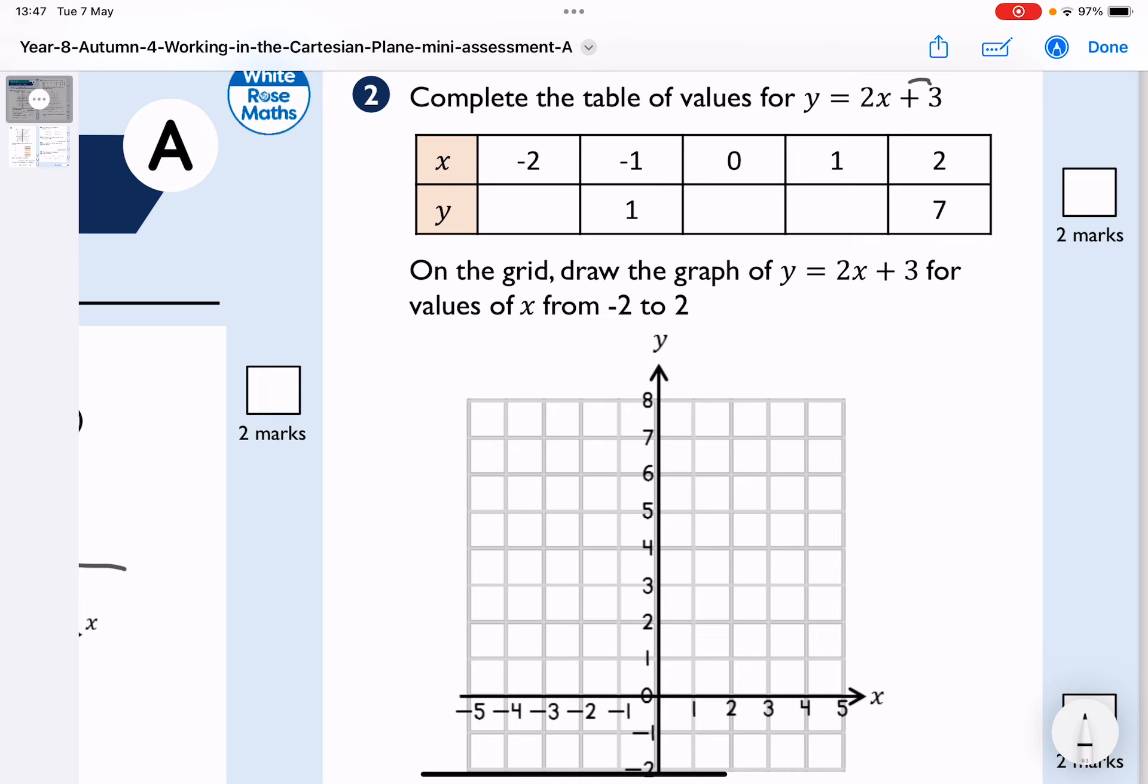When x equals 0, I know that the constant is always going to be the result. So here, under 0, I've got 3. I then look at this number here, the coefficient of x.